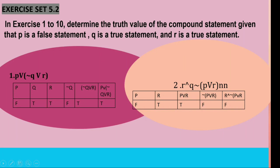For number 2, P is false and R is true. First, we identify P disjunction R based on the truth value table. If P is false and R is true, then P disjunction R is true. Then for negation of P conjunction R, we make the statement not true. For R disjunction negation of P conjunction R, we evaluate the result based on the truth table.